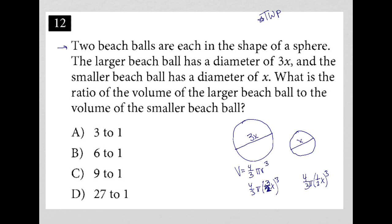So what is the ratio of the volume of the larger beach ball? So that's 4 thirds pi 3 half x cubed over the volume of the smaller, which is 4 thirds pi 1 half x cubed.